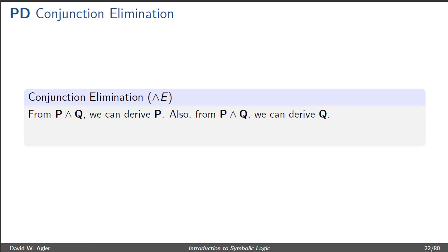In this video I want to talk about the use of conjunction elimination. Conjunction elimination says that from a conjunction P wedge Q, where P is any formula in the language of propositional logic, and Q is also any formula in the language of propositional logic, we can derive either one of the conjuncts. So from P and Q we can derive P, and also from P and Q we can derive Q.